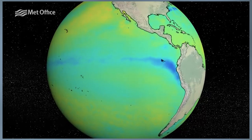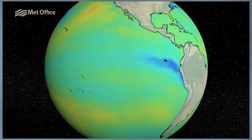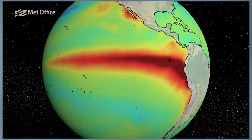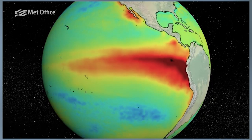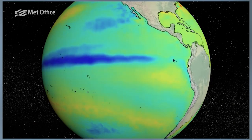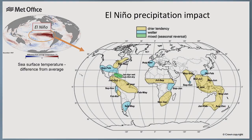El Niño Southern Oscillation, or ENSO for short, is a key climate driver with well-established relationships with the climate in different regions of the world. ENSO is a phenomenon involving changes in the ocean and atmosphere over the tropical Pacific, with changes happening over a two to seven year cycle. The warm phase, El Niño, and the cool phase, La Niña, can disrupt weather patterns across many parts of the world, but especially in the tropics and subtropics. For example, El Niño events have been linked to drier than average conditions in South Asia during the summer monsoon, and wetter than average conditions over East Africa between September and January.